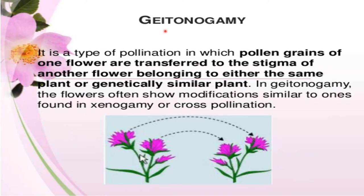In geitonogamy, pollen grains of one flower are transferred to the stigma of another flower belonging to either the same plant or a genetically similar plant. Geitonogamy flowers often show modifications similar to those found in xenogamy or cross pollination.